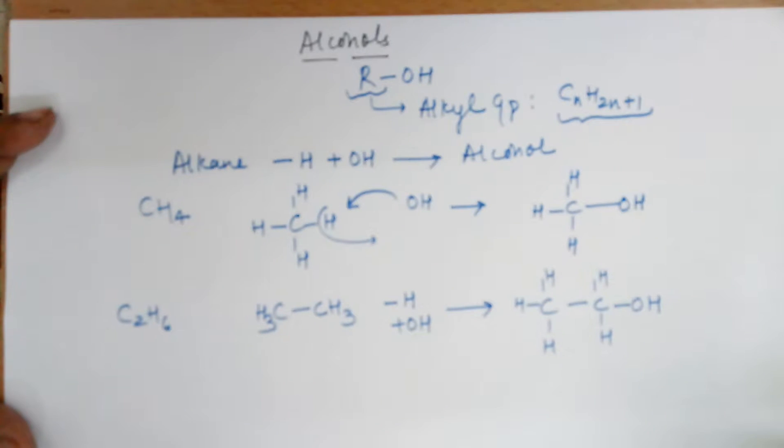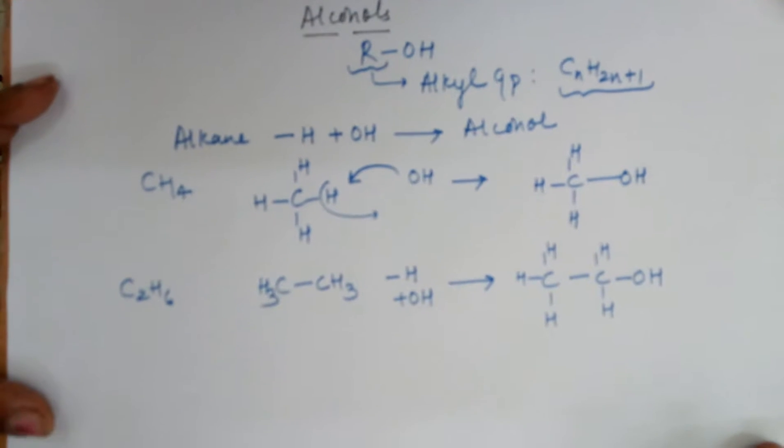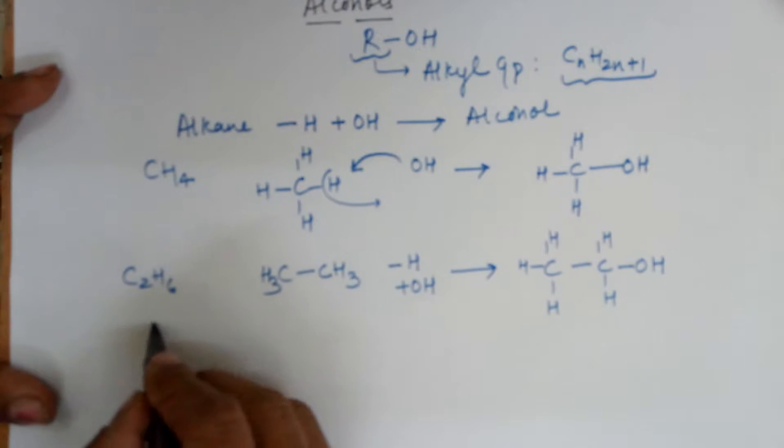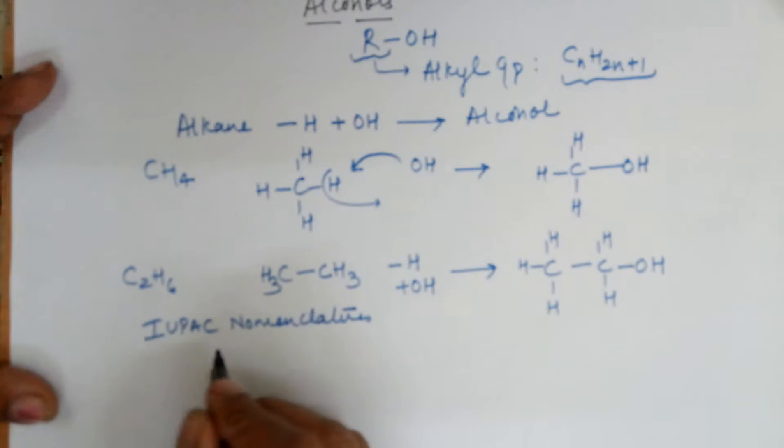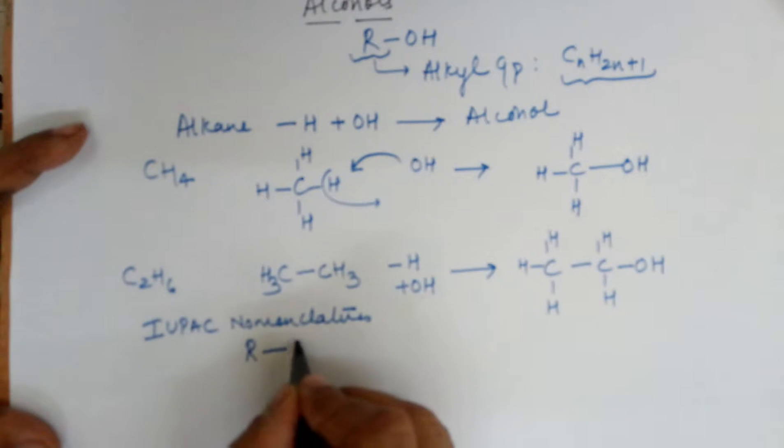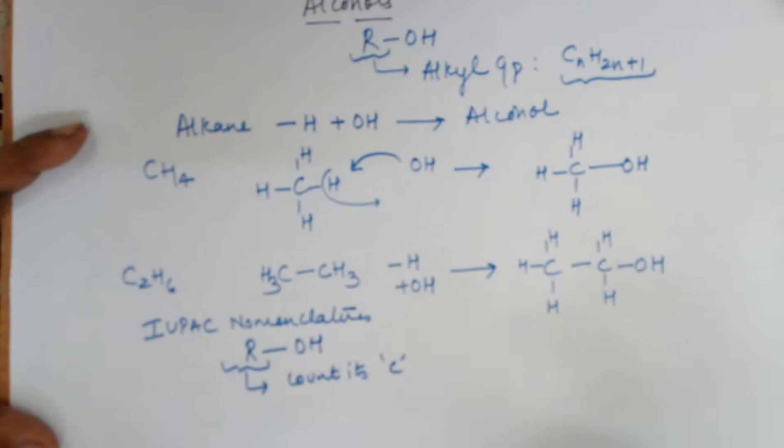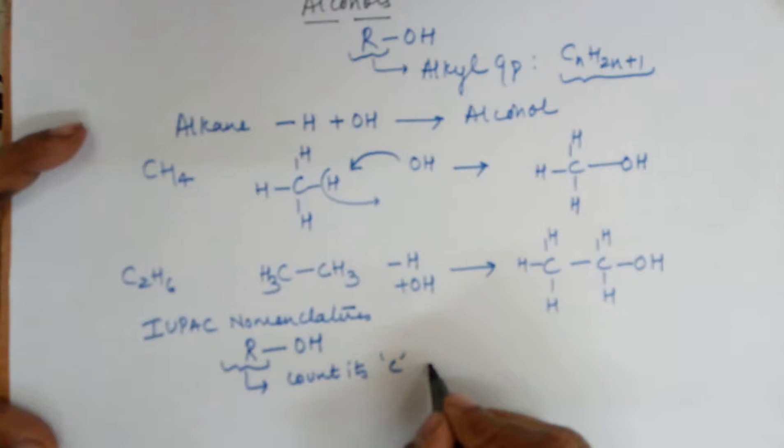Both of these are known as alcohols. Coming to the nomenclature of alcohols, the IUPAC nomenclature says in case of an alcohol ROH, you take the R group, count its carbons in the longest chain, but the carbon chain should have the OH in one of the carbons. Count its carbons and name it as alkane, after that remove the E and add 'ol'.